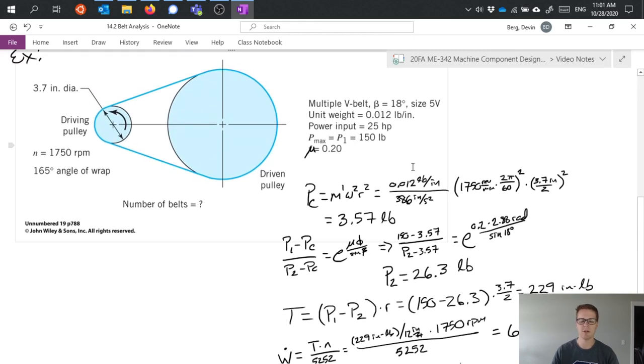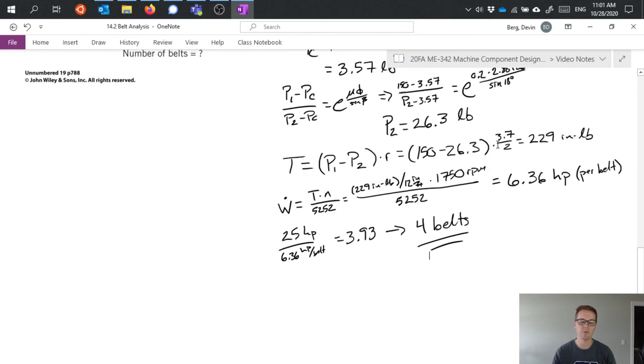Of course this is all based on the fact that the specific belt that we would use was specified in the problem and we specified what its maximum tension carrying capacity is. If we had options we could potentially choose a different belt with a higher tension rating which would allow us to maybe use fewer belts. But given the limitations of the problem this is the requirement for belts to be able to carry 25 horsepower. All right thanks.